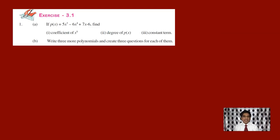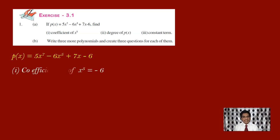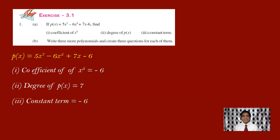Now let us discuss the problems of exercise 3.1. Look at the first question: if p of x is equal to 5x power 7 minus 6x square plus 7x minus 6, find the coefficient of x power 5, find the degree of p of x, and what is the constant term. The polynomial is 5x power 7 minus 6x power 5 plus 7x minus 6. The coefficient of x power 5 is minus 6 — it is not 6, it is minus 6. The degree of the polynomial is 7, since 7 is the highest power. The constant term is minus 6.